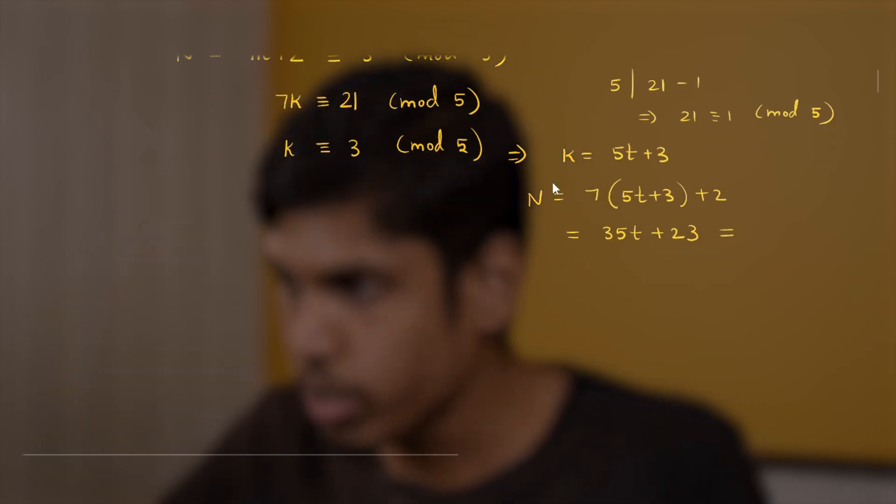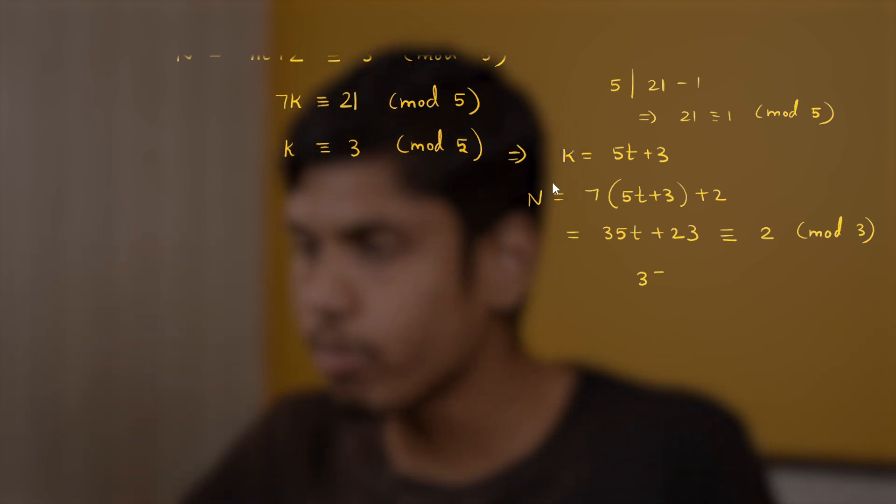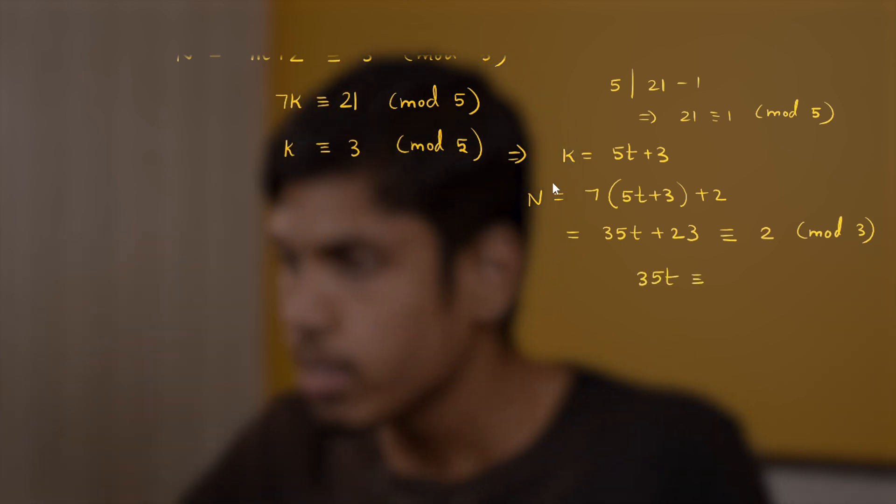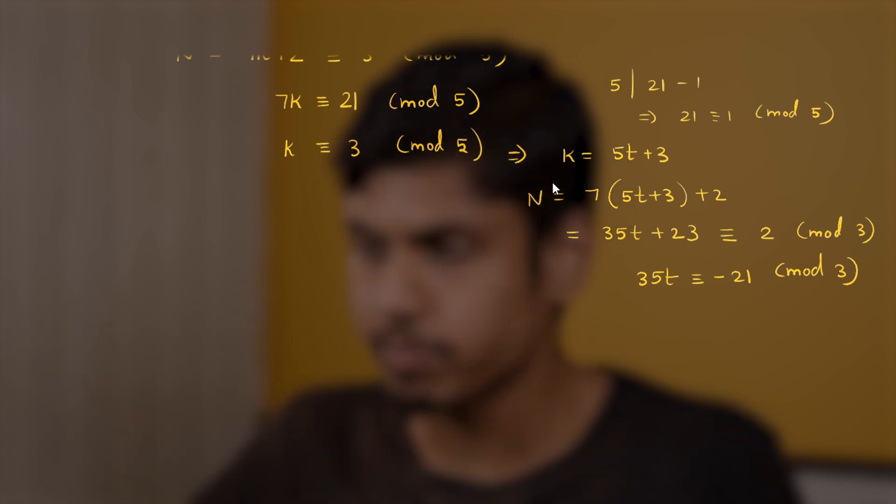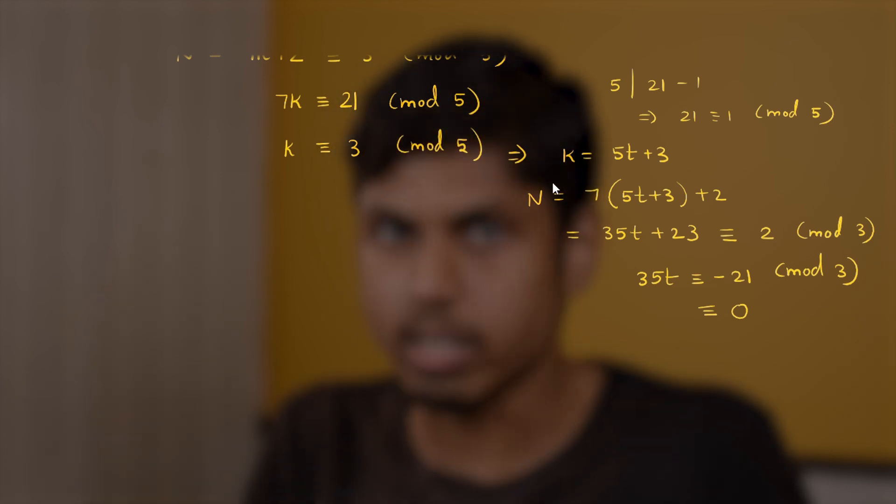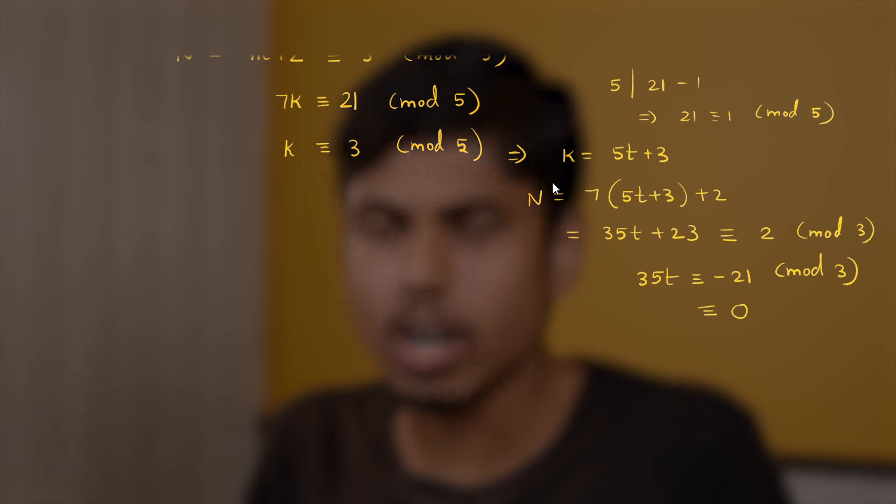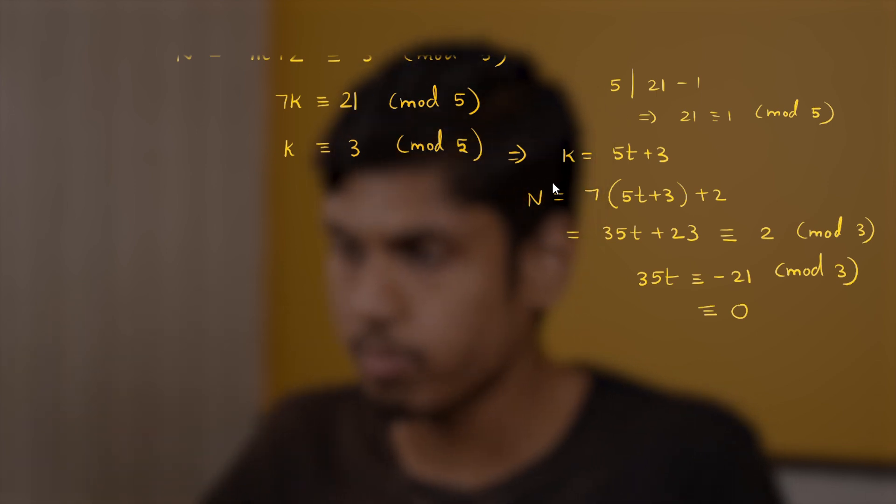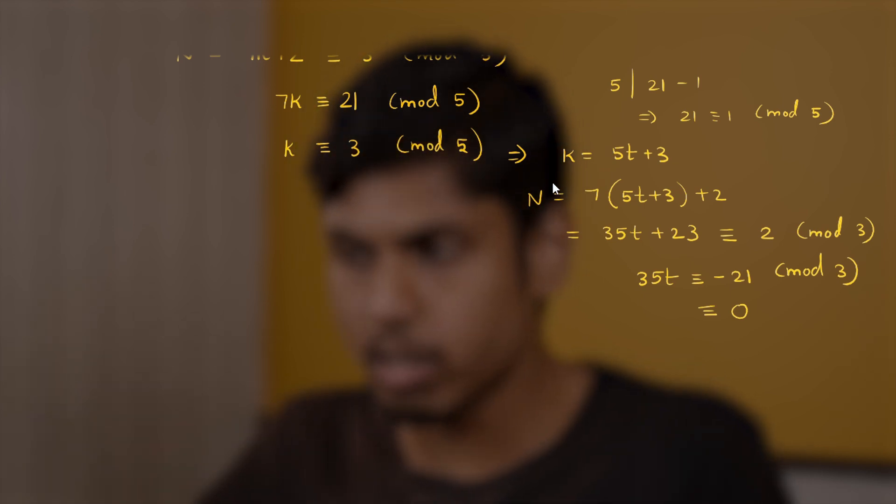Now this has to be congruent to 2 mod 3. And moving 23 to the RHS you would get 35t congruent to minus 21 mod 3. But 21 is already divisible by 3, right? So 21 is actually congruent to 0 mod 3. As we know any number is congruent to its remainder when divided by the divisor. So 0 is the remainder. So I can equate it to 0 through congruence. And I can also move 35 to the RHS by dividing 35 both sides. And you get t is congruent to 0 mod 3.